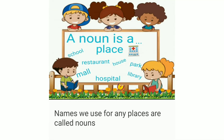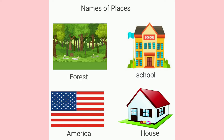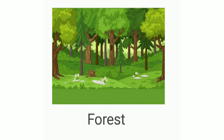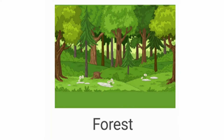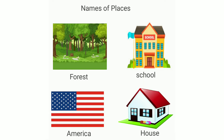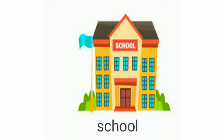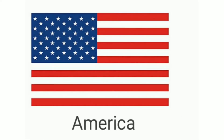Nouns are also names of places — forest, school, America, house. All these words are names given to places. What is a forest? Forest is a place where there are many wild animals, so forest is a noun. School is a place where children study, so school is a naming word and therefore it is a noun.